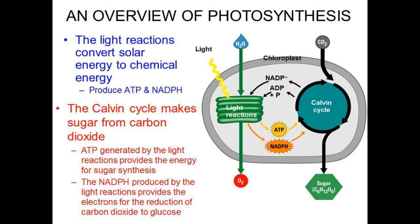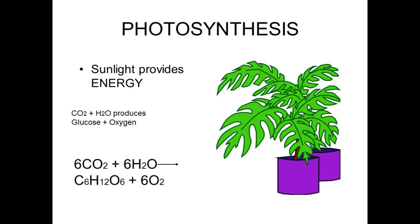In the dark reaction, NADPH and ATP are used for fixing carbon dioxide and converting it into carbohydrates. The dark reaction is also called the Calvin cycle or C3 cycle. Sugar is formed from carbon dioxide, and ATP generated in the light reaction provides energy for sugar synthesis. NADPH, produced by photolysis of water in the light reaction, reacts with CO2 and reduces it to glucose.